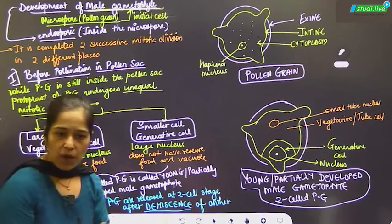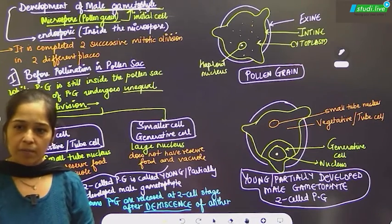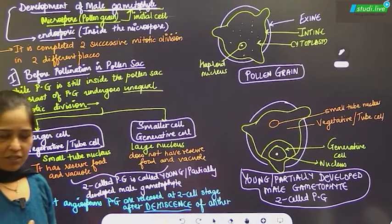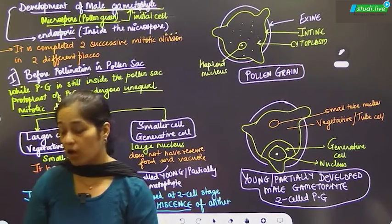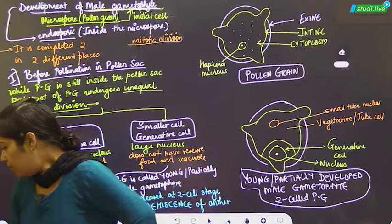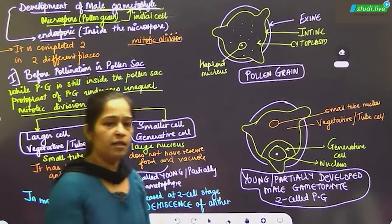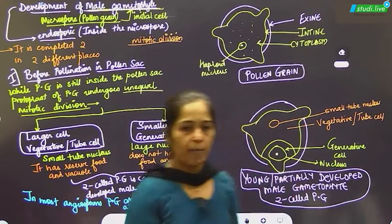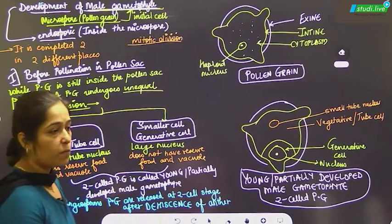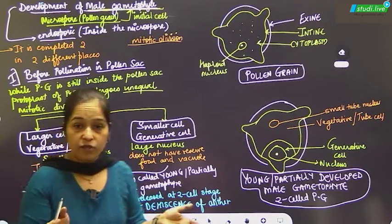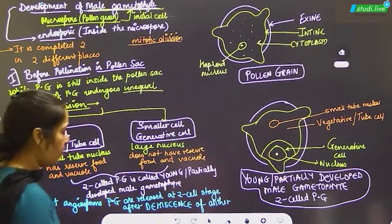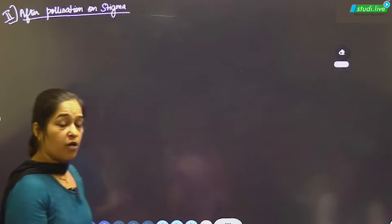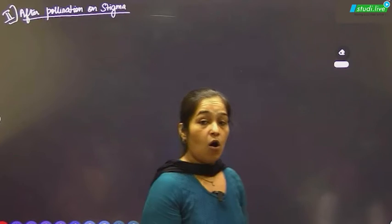So far we have completed half the answer, in which we saw one mitotic division producing two unequal cells — the larger cell (vegetative/tube cell) and the smaller cell (generative cell). The two-cell structure is called the young or partially developed male gametophyte. Now we move to after pollination on the stigma.